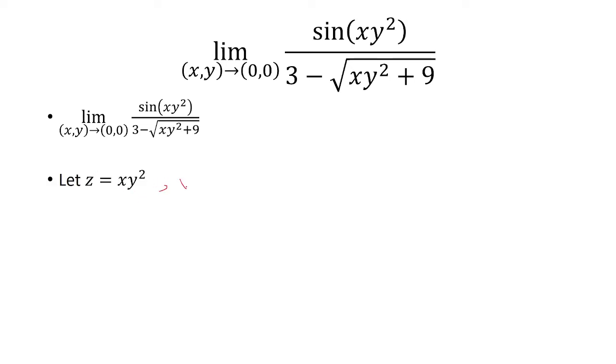As x and y approach (0, 0), then z will also approach 0, since 0 times 0 squared is 0.